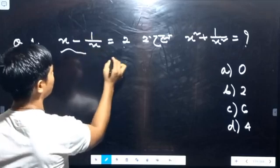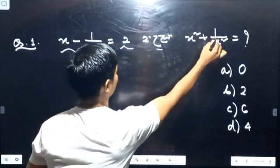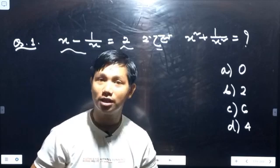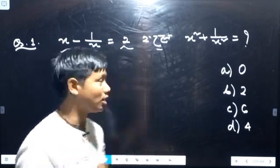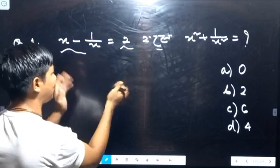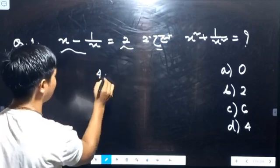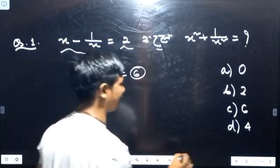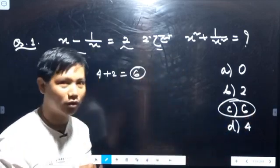x minus 1 by x is equal to 2. So x squared plus 1 by x squared: you have to split the square — when you put the square of 2, you will get 6, so this one will give you 5.